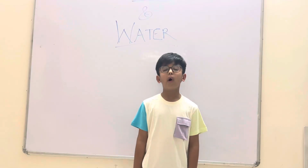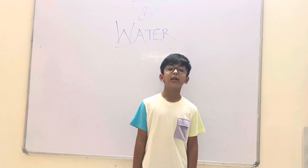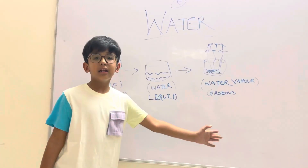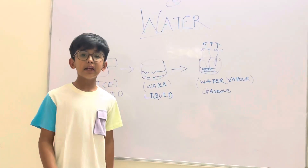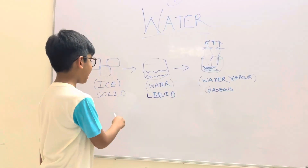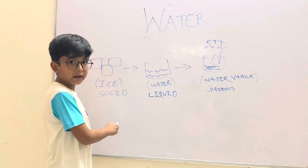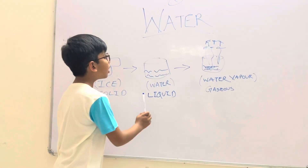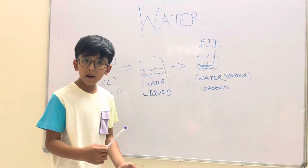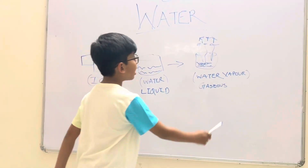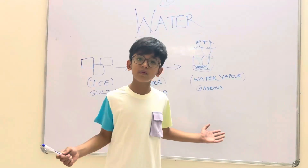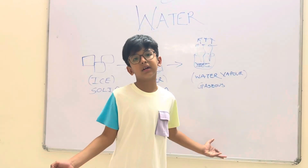Ice, water, and water vapor — these are the three forms of water. Ice is the solid form of water. Water is the liquid form of water. Water vapor is the gaseous form of water.